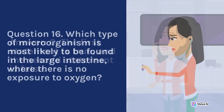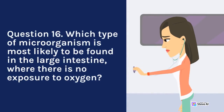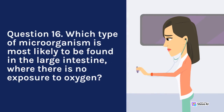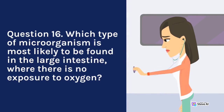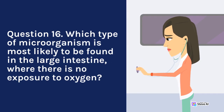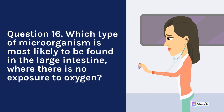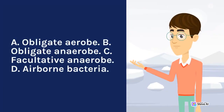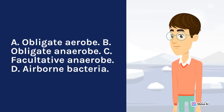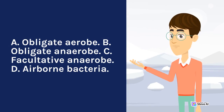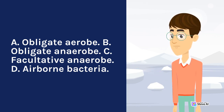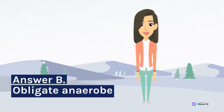Question 16. Which type of microorganism is most likely to be found in the large intestine, where there is no exposure to oxygen? A. Obligate aerobe. B. Obligate anaerobe. C. Facultative anaerobe. D. Airborne bacteria. Answer: B. Obligate anaerobe.